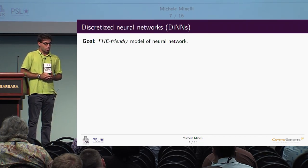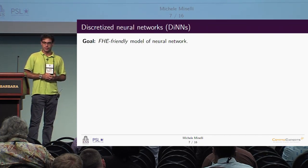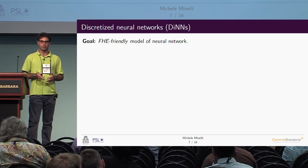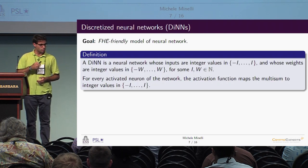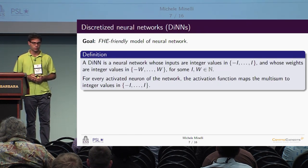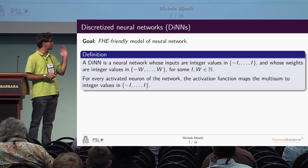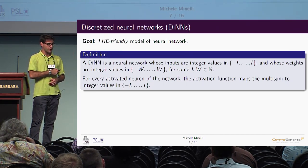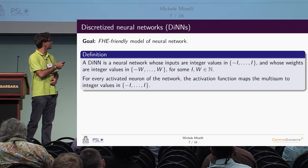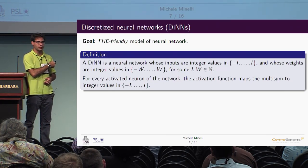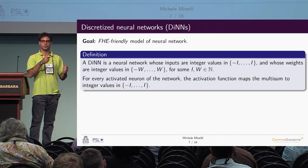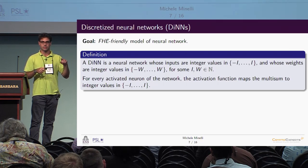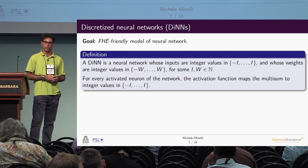The goal is to define an FHE-friendly model of neural network — one that can be efficiently evaluated homomorphically. We define this object called the discretized neural network, or DNN. We take integer values for the inputs, integer values for the weights, and an activation function that maps whatever comes out of the multisum back to the input space. This cyclical structure ensures we can continue computing for an unbounded number of operations.